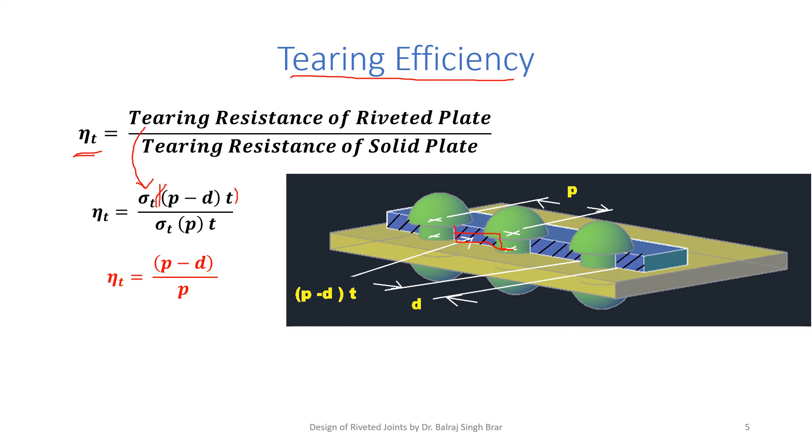When no hole is there, we have a solid plate. So this area will be total length P times thickness T. It will be multiplied by allowable tensile strength, and we can get the tearing resistance. Now in the numerator and denominator, sigma T and T cancel out, and we get the relation for tearing efficiency of a lap joint to be (P minus D) by P.